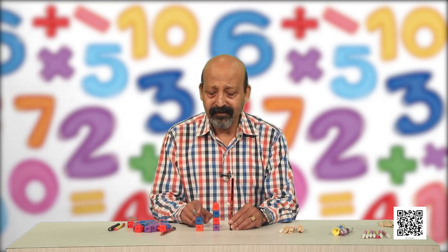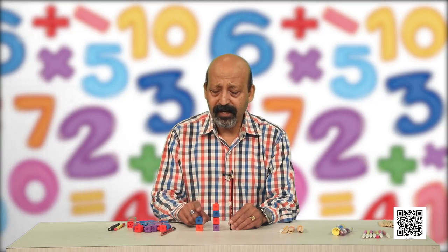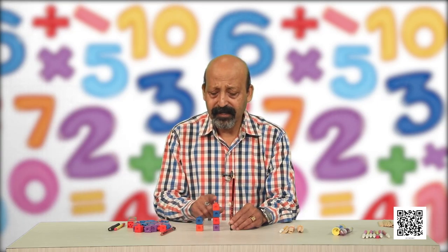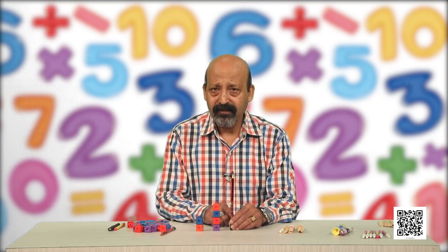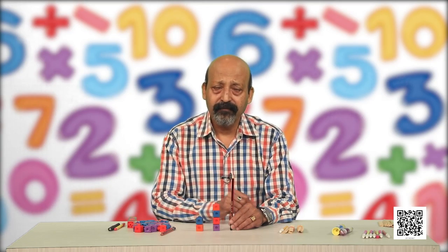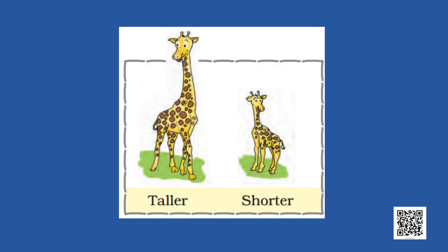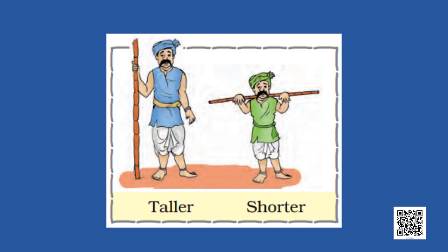This pencil is tallest. These blocks are shorter than the pencil, and this one group is the shortest. This is the shortest, but this is taller than this group, and the pencil is tallest in these three. On your screen, you are able to see two giraffes — which one is taller and which is shorter? It is written there, you can read and tell.